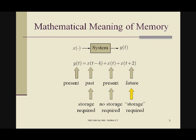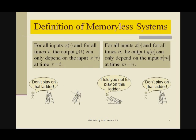Here is our definition of a system that is memoryless. For all inputs x(·) and for all times t, the output y(t) can only depend on the input x(τ) at time τ=t. In discrete time, for all inputs x[·] and all times n, the output y[n] can only depend on the input x[m] at time m=n.